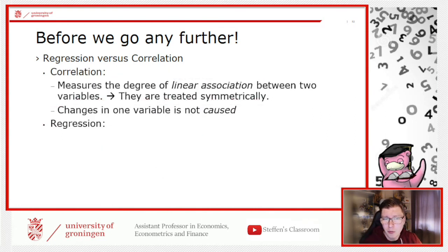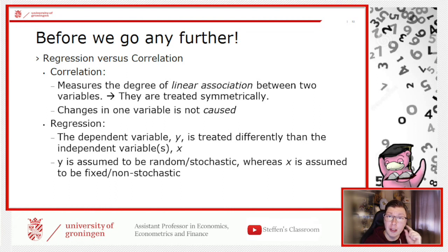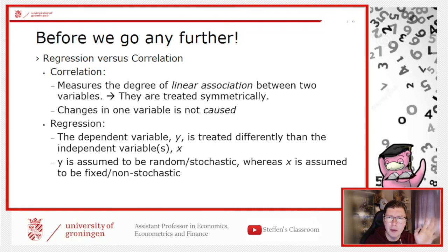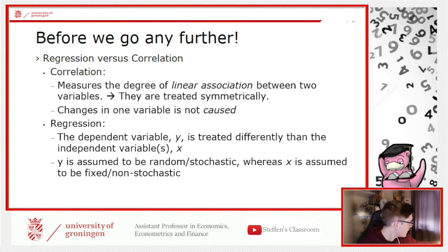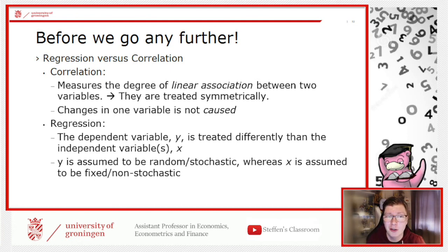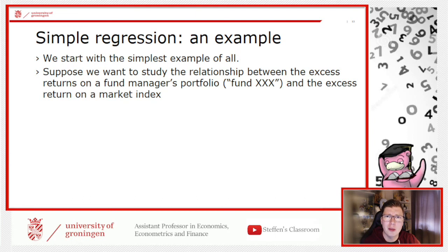Regression analysis is different. Now you have a dependent variable Y and an independent variable X — they're not treated the same. Y is stochastic, meaning random, and has a probability distribution around it, while X is assumed fixed and non-stochastic. This makes a very big difference: here you can talk about Y being caused by X, which you cannot say in correlation.